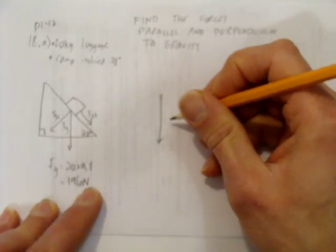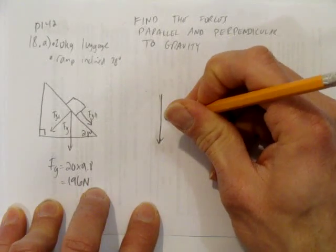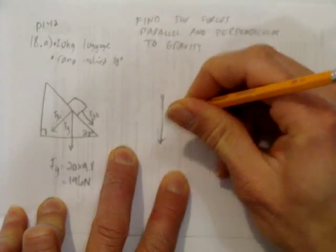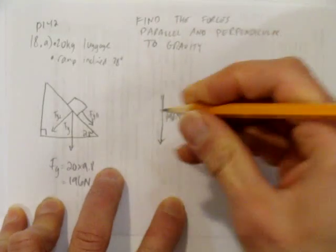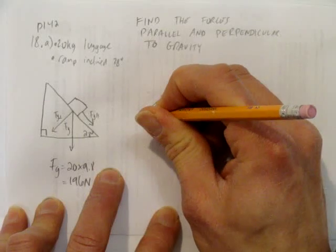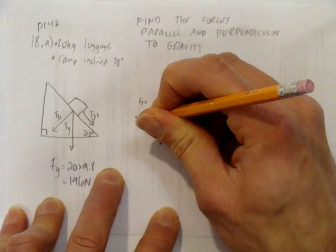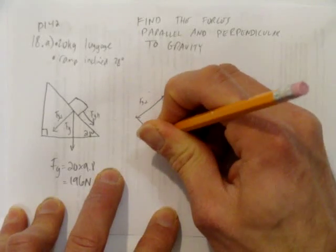This straight up and down force of gravity is 196 newtons. And then there's a perpendicular force this way, force of gravity perpendicular, and the force of gravity parallel.